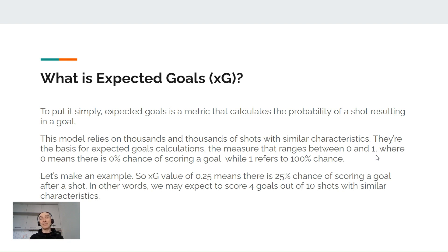Let's make an example to understand this concept more easily. An expected goal value of 0.25 means there is a 25% chance of scoring a goal after a shot. In other words, we may expect to score four goals out of ten shots with similar characteristics.